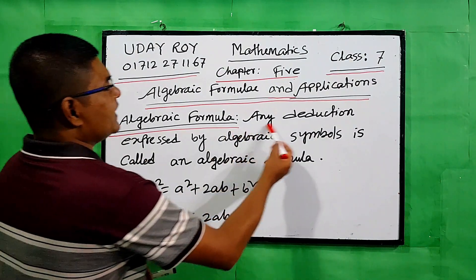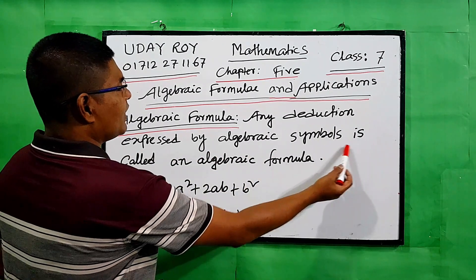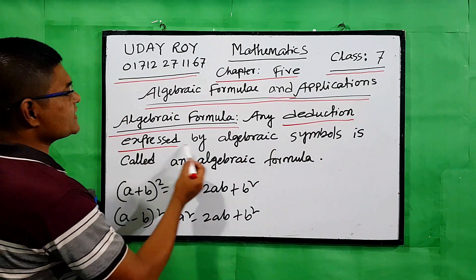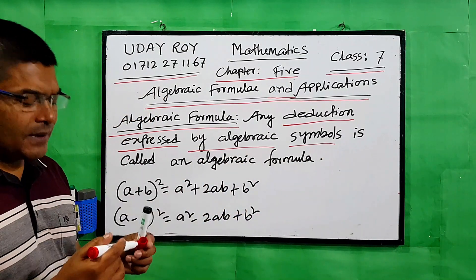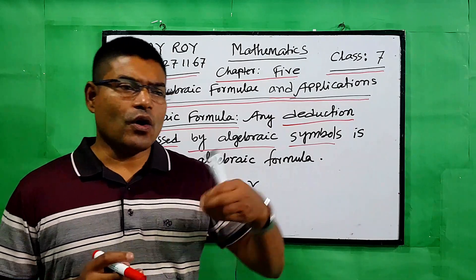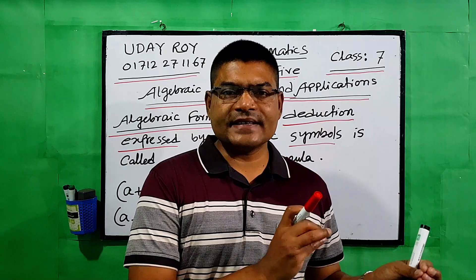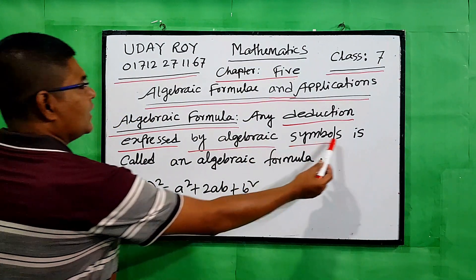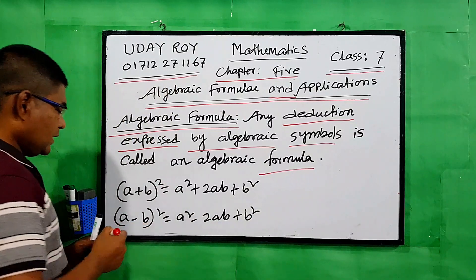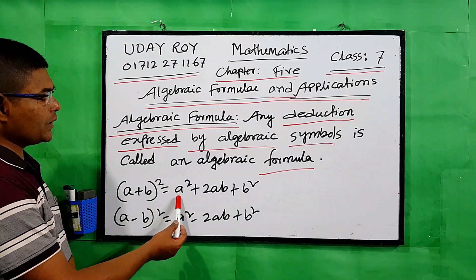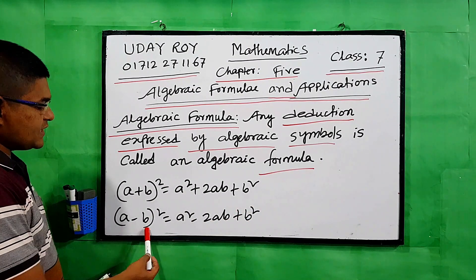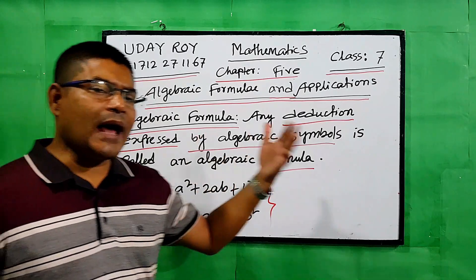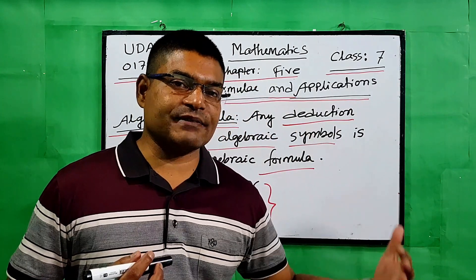Any deduction expressed by algebraic symbols is called an algebraic formula. Algebraic symbols means you use variables like x, y, z — for example, 2x + 3y + 4z or 2a + 2b + 3c. For example, (a + b)² = a² + 2ab + b², and (a - b)² = a² - 2ab + b². These are algebraic formulas.